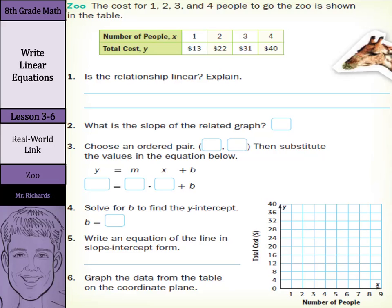In our real-world example, we have an example with the zoo, and the cost for 1, 2, 3, and 4 people to go to the zoo is shown in the table. The number of people, 1, 2, 3, and 4, are represented by x, and the total cost, represented by y, is $13, $22, $31, and $40. And is this linear?